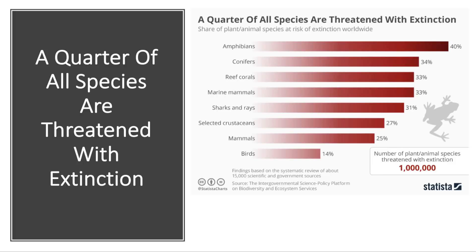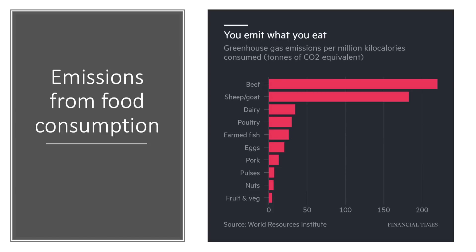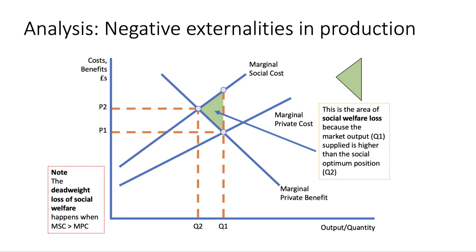Then we have the topical issue of threats to biodiversity. A recent report says a quarter of all species are threatened with extinction. There are also huge issues now to do with emissions from food consumption, the growth of vegetarianism and veganism, and increased pressure on public policy to address the greenhouse gas emissions from beef, sheep, and goat production.